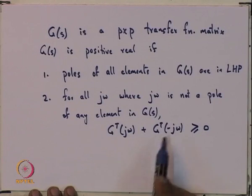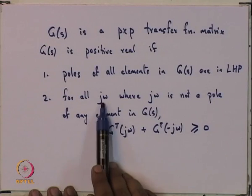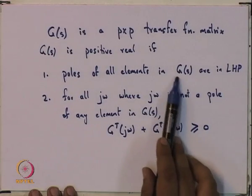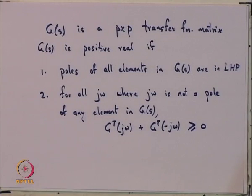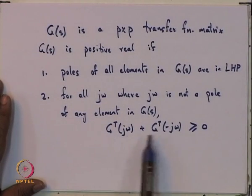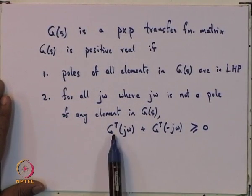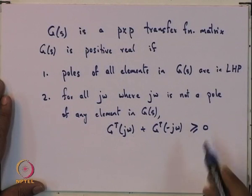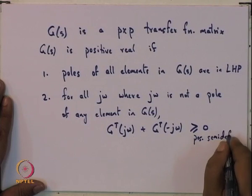What we are saying is: for all jω where jω is not a pole — if jω were a pole for some entry in the transfer function matrix, this would not be well defined. So you remove all those ω on the imaginary axis which might be a pole of any entry of G, and for all the others this sum of two matrices must be a positive semi-definite matrix.